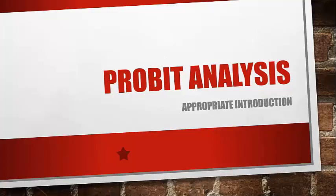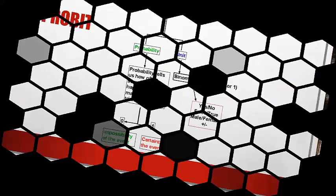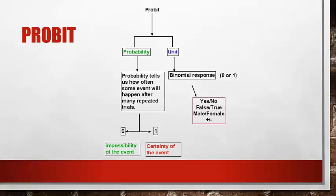Probit analysis is an appropriate introduction to probit — a combination of probability and units. Probability tells us how often some events will happen after many trials. It has two options: zero for the impossibility of an event, and one for the possible certainty of an event.